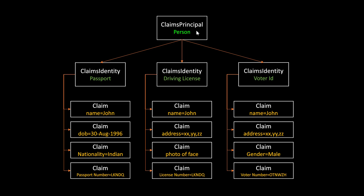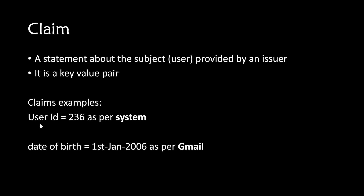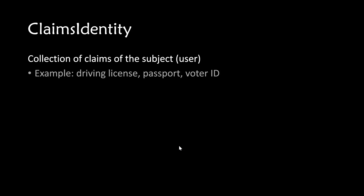A user can have multiple claims identities and each claims identity can have claims about the user. Now let's go to the slides. A claim is a statement about the subject which is provided by an issuer — so a claim is a key-value pair. For example, user ID equal to 236 as per the system, or date of birth equal to 1st Jan 2006 as per Gmail. A collection of claims about the subject is a claims identity. For example, a driving license, a passport, a voter ID — these are all claims identities.